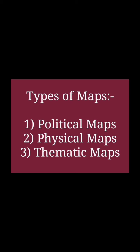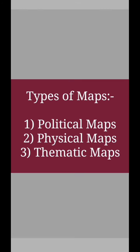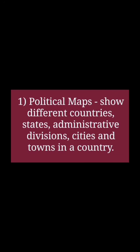Next topic is types of maps. There are three types of maps. The first is political maps, which show different countries, states, administrative divisions, cities, and towns in a country. The second is physical maps, which show different physical features such as mountains, rivers, plains, and plateaus.